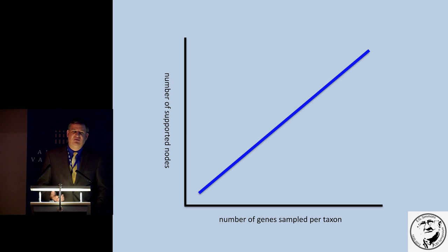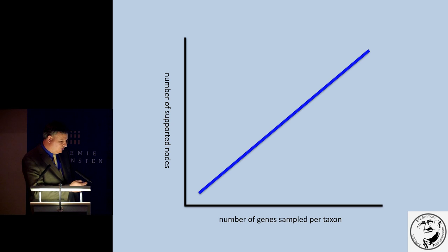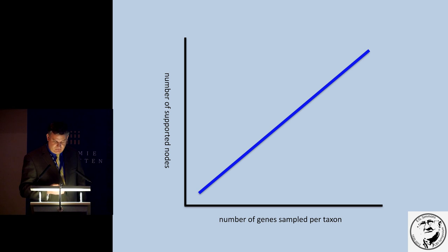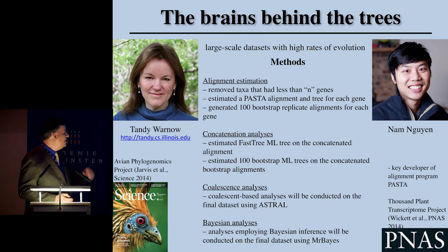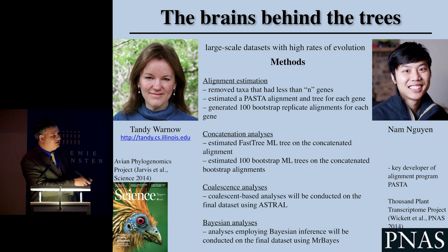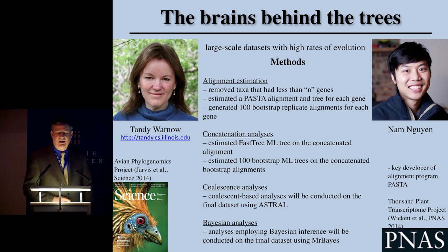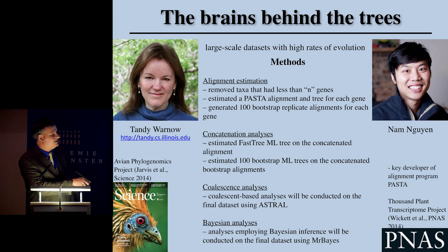This is an oversimplified graph showing the number of genes sampled per taxon versus the number of supported nodes. As you sample more genes per taxon, your support along the backbone goes up. Our first data set, the largest, sampled one to five genes, representing 610 taxa, 417 genera, and 240 type species. The downside was that only one single node on the entire backbone of the tree was supported — not very useful.